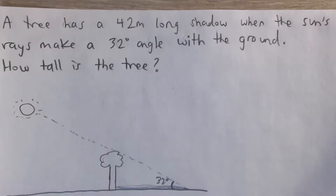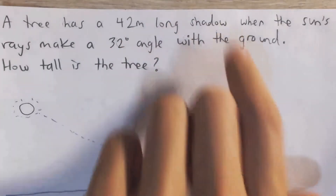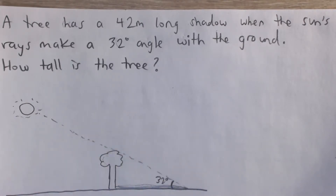A tree has a 42 meter long shadow when the sun's rays make a 32 degree angle with the ground. How tall is this tree?